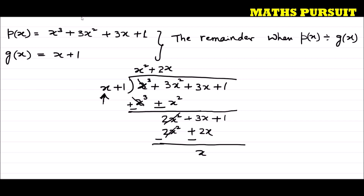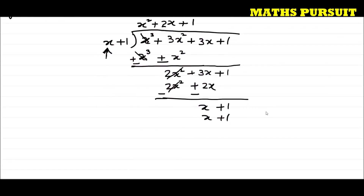We got x + 1 as the new dividend, and the divisor is also x + 1. If I multiply 1 by x + 1, I get x + 1. After subtracting, x + 1 cancels out with x + 1, and we get remainder = 0.